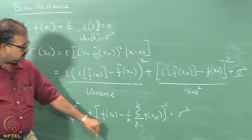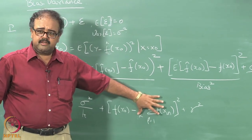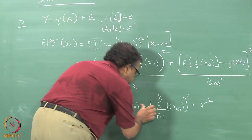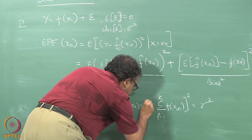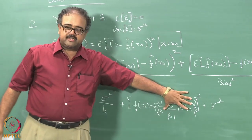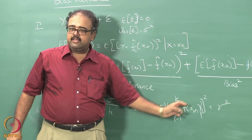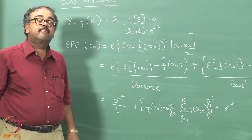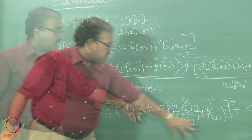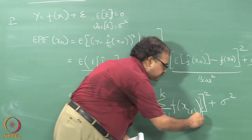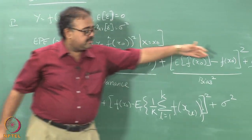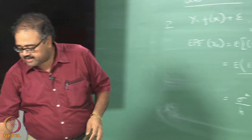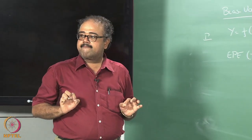Now this bias term — this is essentially my expected prediction over the training data. I am going to take the K nearest neighbors of a data point, take the average of that — that will be the prediction I am making. This is the prediction I am going to make, and this is the expected value of Y which is f of x naught. Let us try and look at what happens when I change my K.